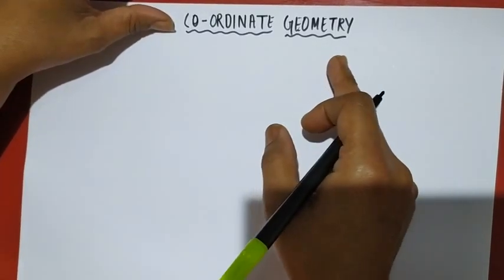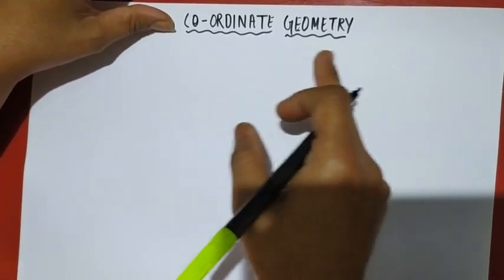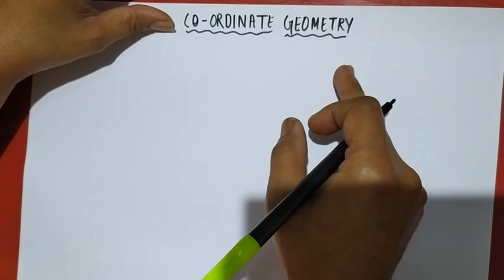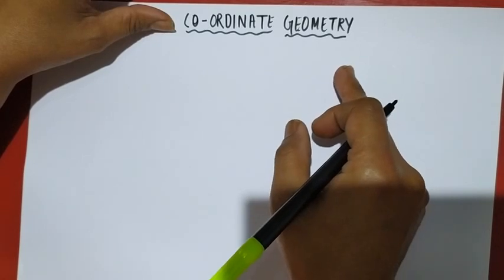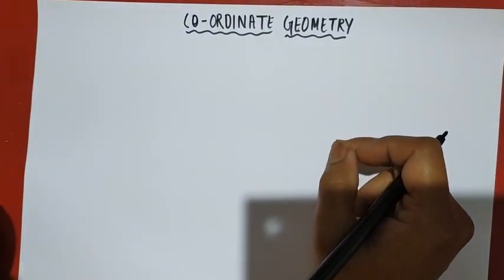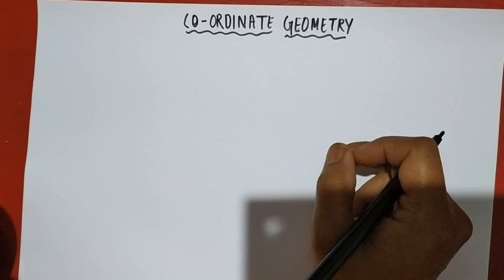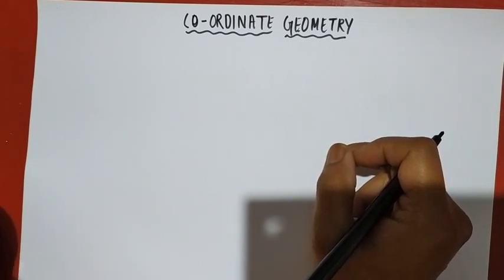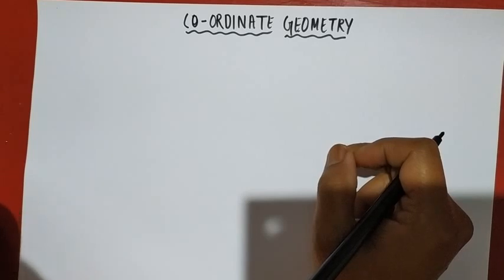What is Coordinate Geometry? What are Coordinate Points?